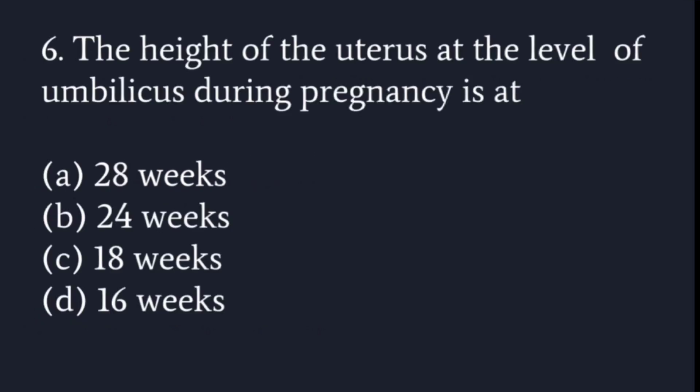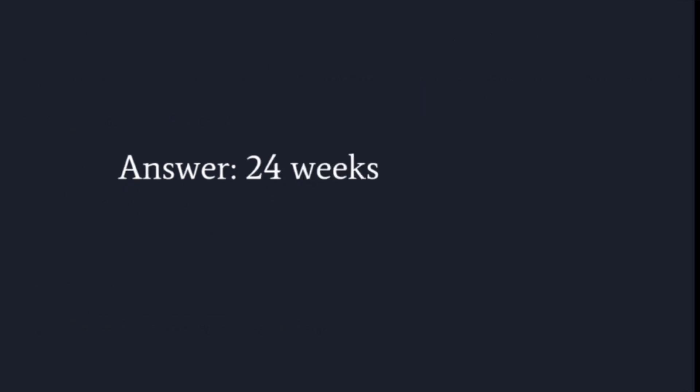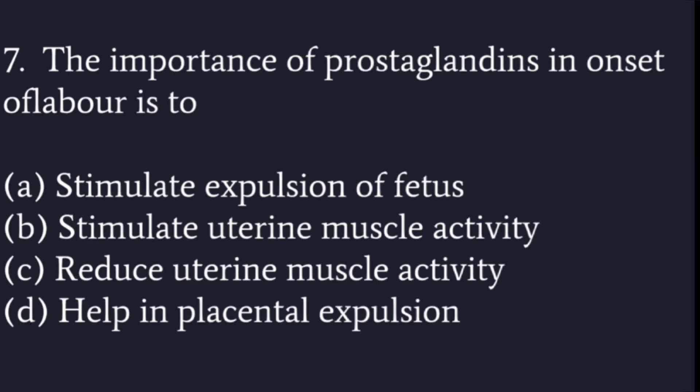The height of the uterus at the level of the umbilicus during pregnancy is at: 28 weeks, 24 weeks, 18 weeks, or 16 weeks? When the uterus has grown enough to reach the level of the umbilicus on external palpation, the patient is at 24 weeks of gestation. The answer is 24 weeks.